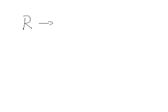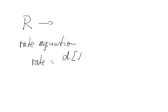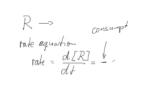Let's say we have a reactant R here, and as the reactant is consumed in a reaction, we can formulate a rate equation. We can say the rate of this reaction equals the change in the concentration of the reactant per time unit, and that equals minus — the minus is because it means consumption of this reactant.